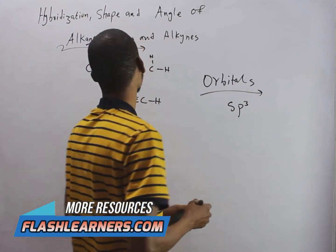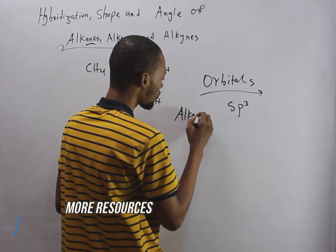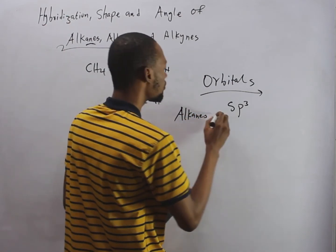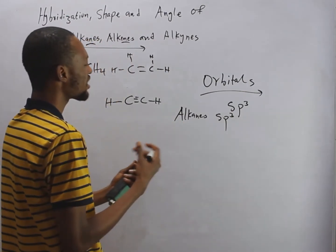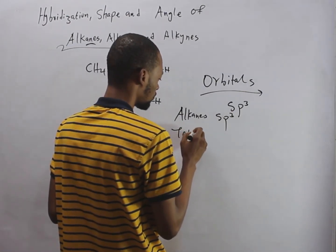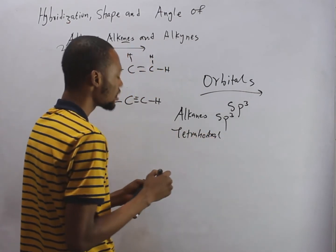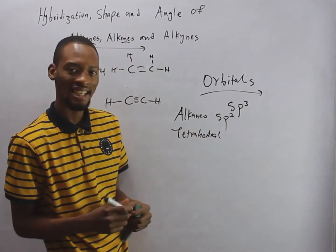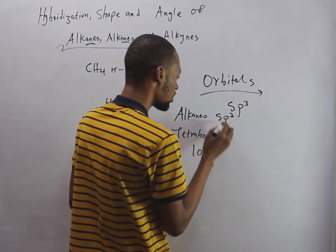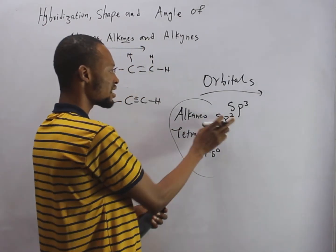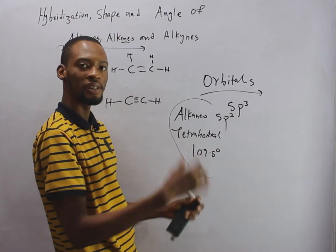For alkanes, they are SP3 hybridized. Their shape is tetrahedral — that is the shape of alkanes. And their bond angle is 109.5 degrees. So when it comes to alkanes: SP3 is the hybridization, tetrahedral is the shape, and 109.5 degrees is the angle between the bonds.